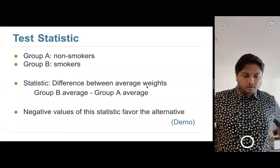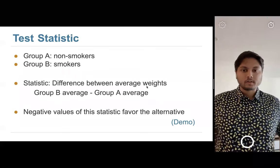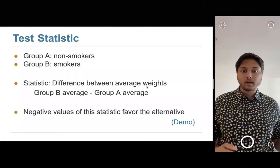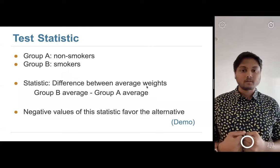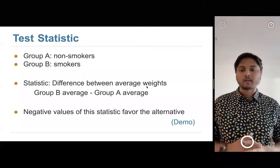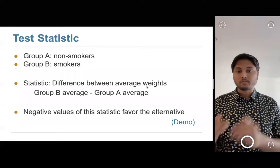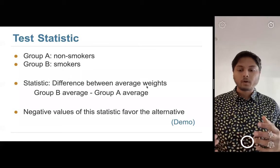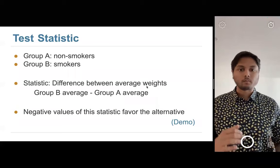A question: could you use the absolute difference? In this case, no — the absolute difference would make both very negative and very positive values evidence for the alternative. But our alternative specifically says one group weighs less than the other, so there's a direction. You should only take the absolute value when the alternative just says the two groups are different, without specifying a direction.